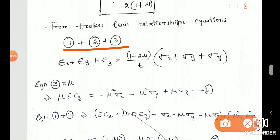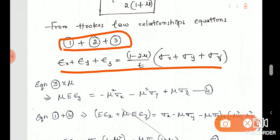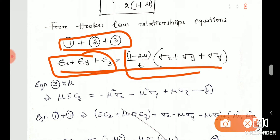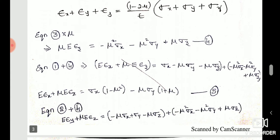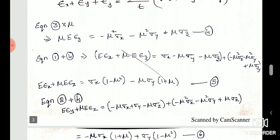Next, using Hooke's law relationships, we take the main three strain equations. By adding the three equations together, left-hand side and right-hand side, we form a combined equation for the stress-strain relationship.